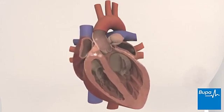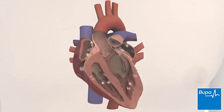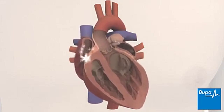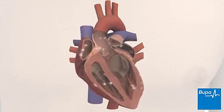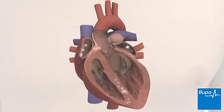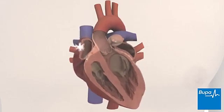The irregular impulses can be transmitted to the ventricles, causing the heart to pump irregularly and too fast.